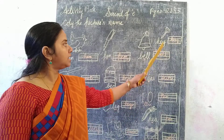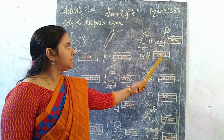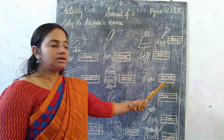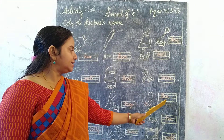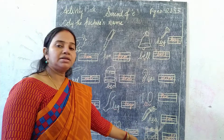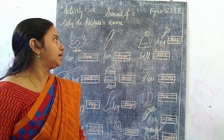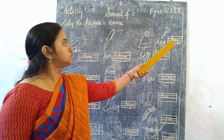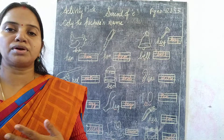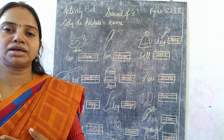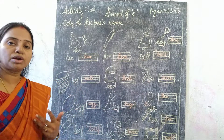E, A, T — Eat; E, P — Pea; E, L, L — Well; and the last one is K, E, Y — Key. In this way, we will try to pronounce it loudly and speak it loudly.